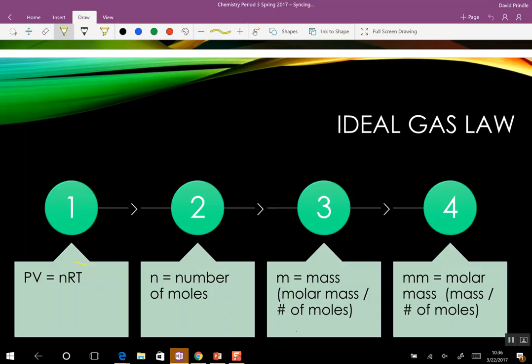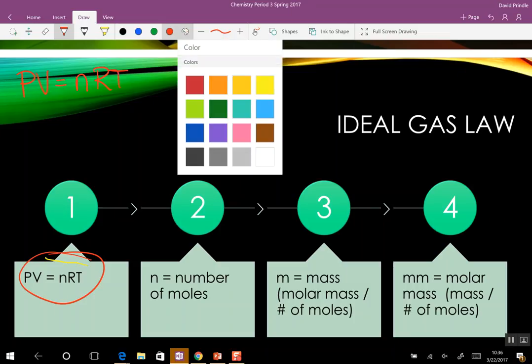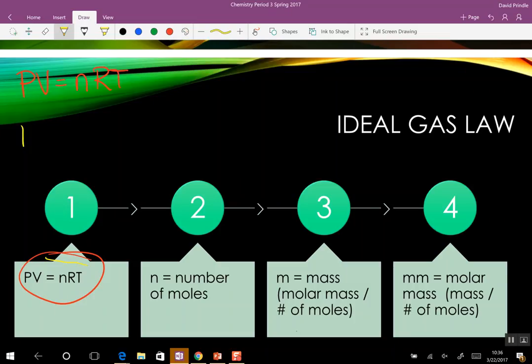Ideal gas law is down here. Get rid of the PV equals NRT. I said this is the only one that you really need to know. So if temperature is not mentioned or the amount of moles, which none of the problems have mentioned, you can get rid of the temperature. You're just left with PV which gives you Boyle's law. That's why you only need this one. If you eliminate what you don't need, it gives you the equation you can use.